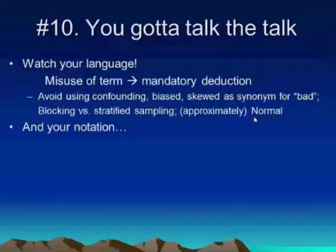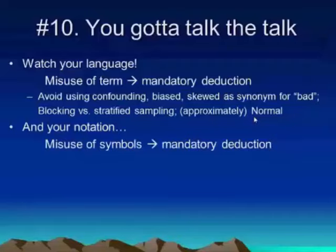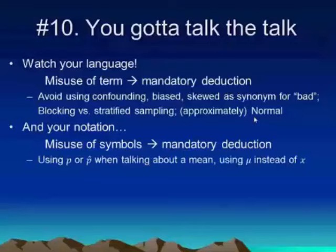Besides language, there's your use of notation. When you are using symbols, you have to use them correctly. A couple of common examples: when students are talking about means, they sometimes unfortunately use notation like P or P-hat, which means they're talking about a proportion. Another common example is using mu instead of x-bar, or vice versa. It's really important to be confident about the symbols you're using. The formula sheet provides correct symbols for the mean and for the proportion.